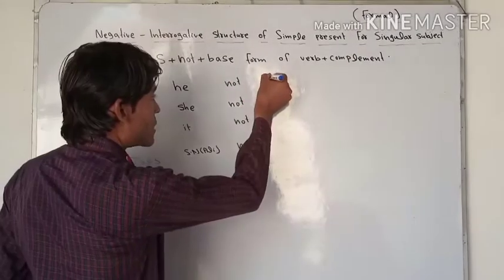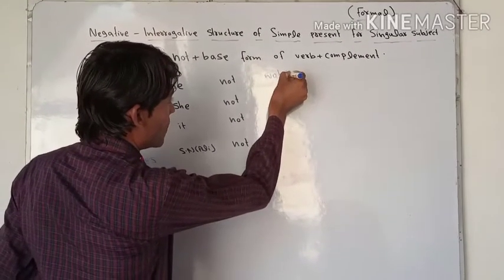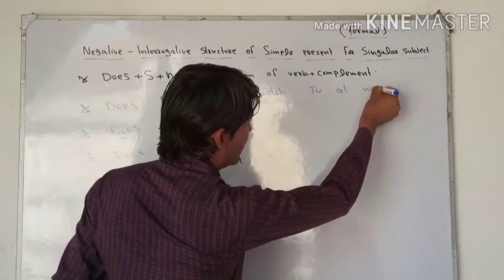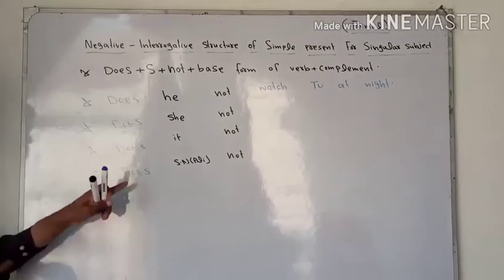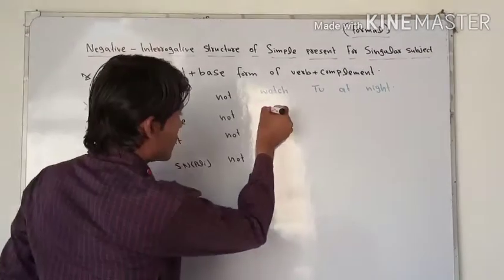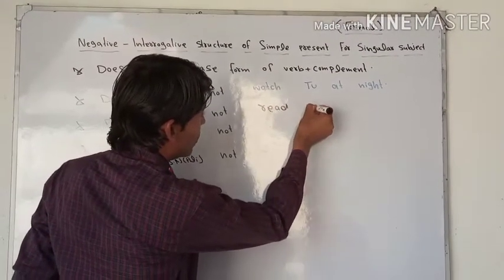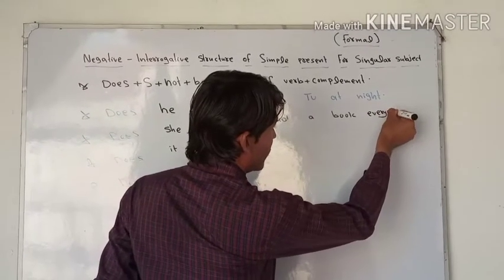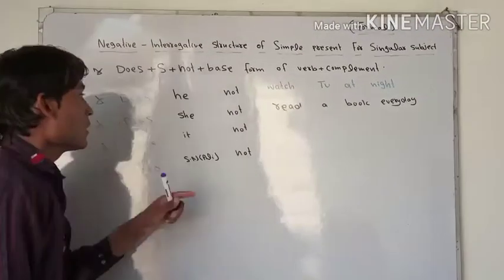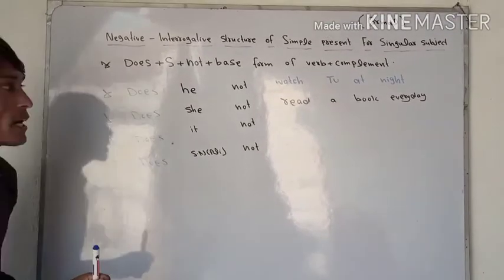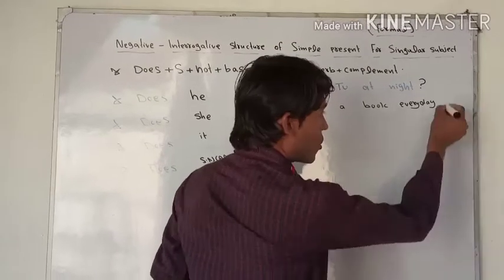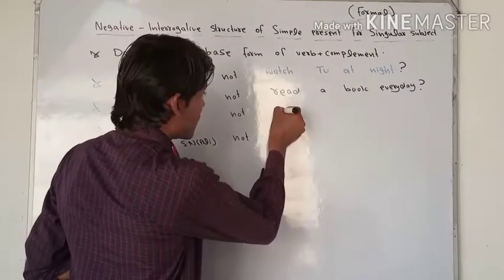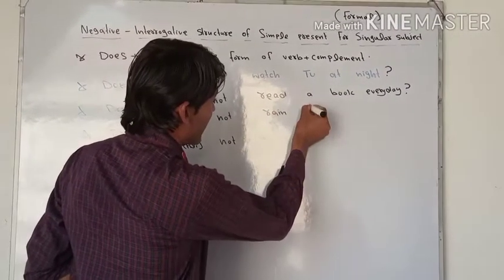For example: 'Does he watch TV at night?' — 'watch' is the base form of the verb. For the second example: 'Does she not read a book every day?' For the third example: 'Does it rain in Naushira?' Keep in mind that in an interrogative sentence we need a question mark — a sign of interrogation — at the end.